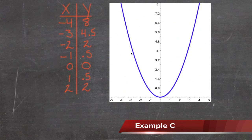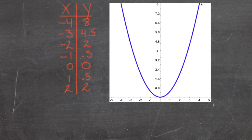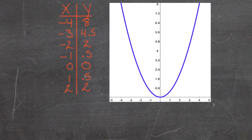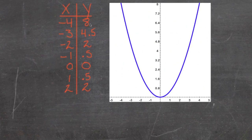Now if you take a look at the graph closely, you'll see that this shape is like a big U — it's actually called a parabola, and you're going to find that these are very consistent for squared functions. What we need to do is find out what happens when we plug a number in, so we can see what process it goes through before it comes out at the other end as a y-value or as an f(x)-value.